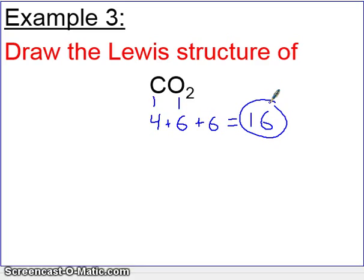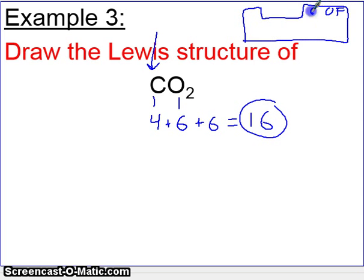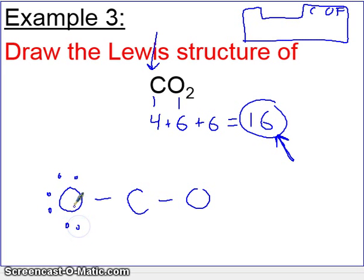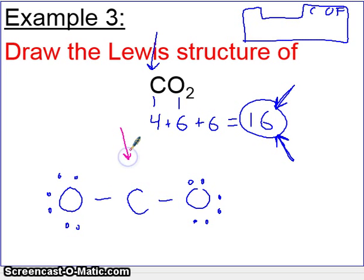Rule number two says decide who goes in the middle. The less electronegative element is carbon — carbon is further away from fluorine on the periodic table, so it is less electronegative. Carbon goes in the middle. We put the two oxygens around the outside, connecting them with lines. We start placing electrons around the outside until we reach 16, filling each oxygen completely. We've now exhausted all 16 electrons. However, if you take a look, carbon does not have an octet — carbon only has four. This is not good.